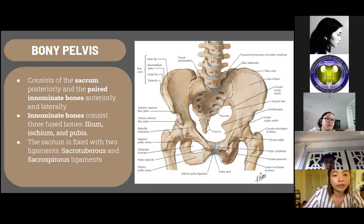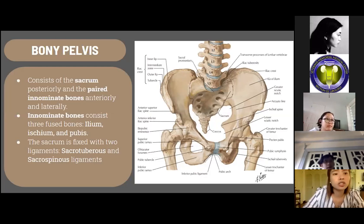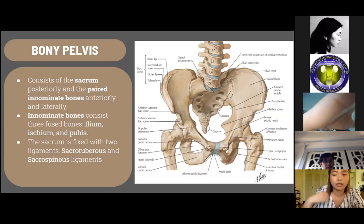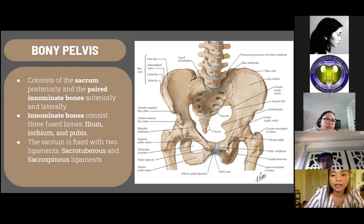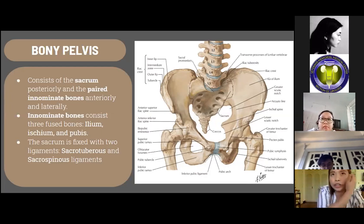The sacrum is fixed with two ligaments: the sacrotuberous and the sacrospinous ligaments. The more posterior one, the sacrotuberous ligament, extends from the sacrum and coccyx to the ischial tuberosities. The more anterior one, the sacrospinous ligament, connects the sacrum and coccyx to the ischial spines. These ligaments stabilize the sacrum, allowing only limited upward movement and providing resilience to the sacroiliac joints when the vertebral column sustains sudden weight increase.